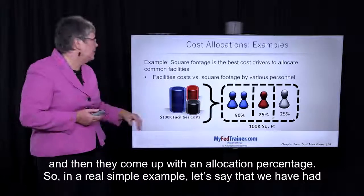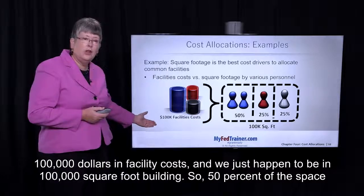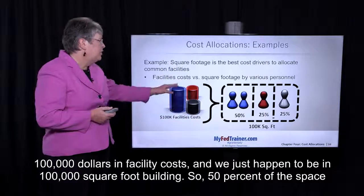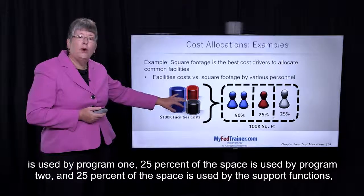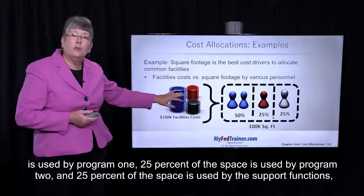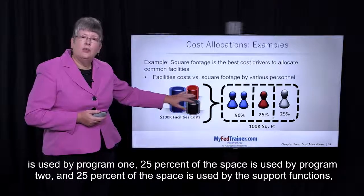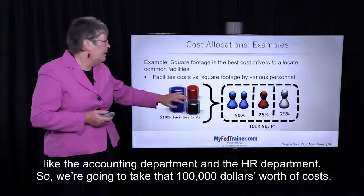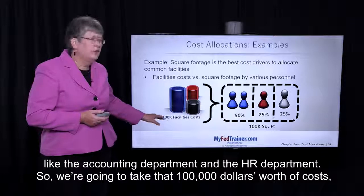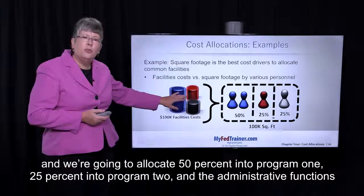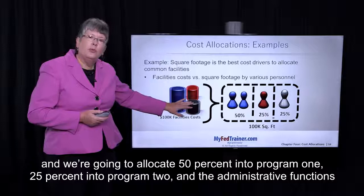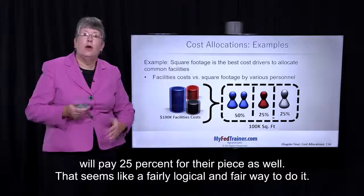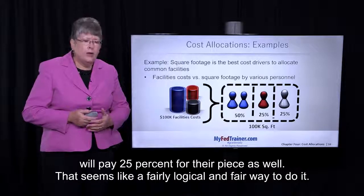In a real simple example, let's say that we had $100,000 in facility costs, and we happen to be in a 100,000 square foot building. So 50% of the space is used by Program 1, 25% of the space is used by Program 2, and 25% of the space is used by support functions like the accounting department and the HR department. We're going to take that $100,000 worth of cost and allocate 50% into Program 1, 25% into Program 2, and the administrative functions will pay 25% for their piece as well.